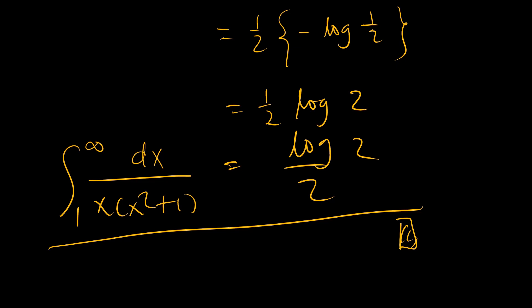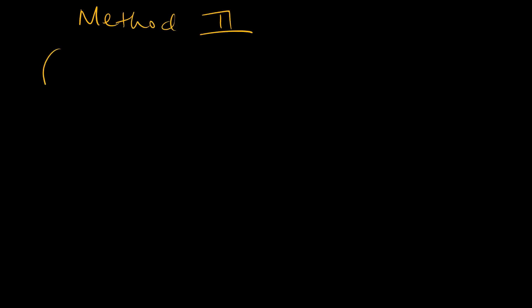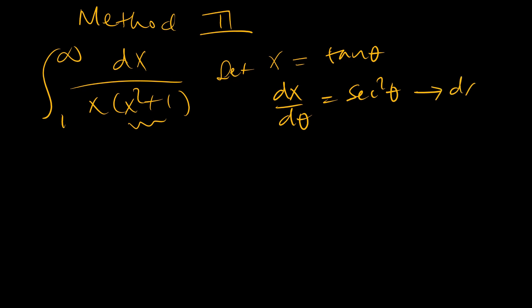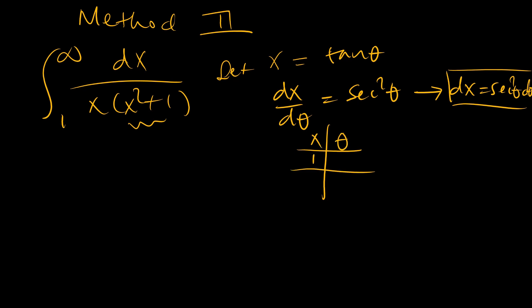That is Method 1. For Method 2, whenever you see x squared plus 1, the useful substitution to try is letting x equal tangent of theta, so that dx/dθ equals sec squared theta, meaning dx is substituted with sec squared theta dθ. When x equals 1, arctan(1) is π/4. When x tends to infinity, arctan tends to π/2.